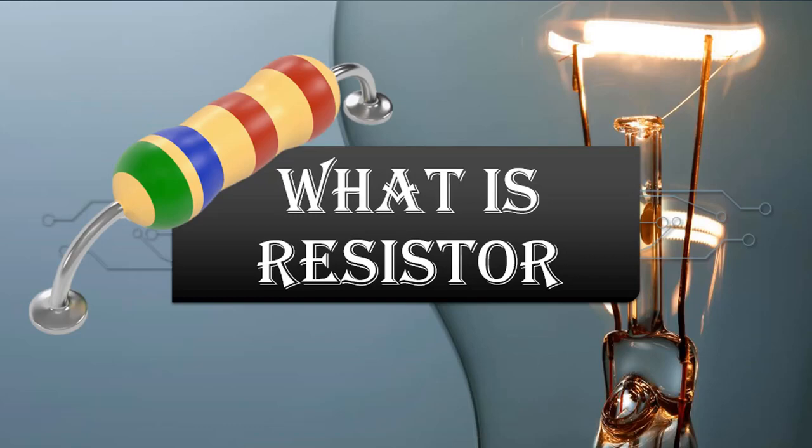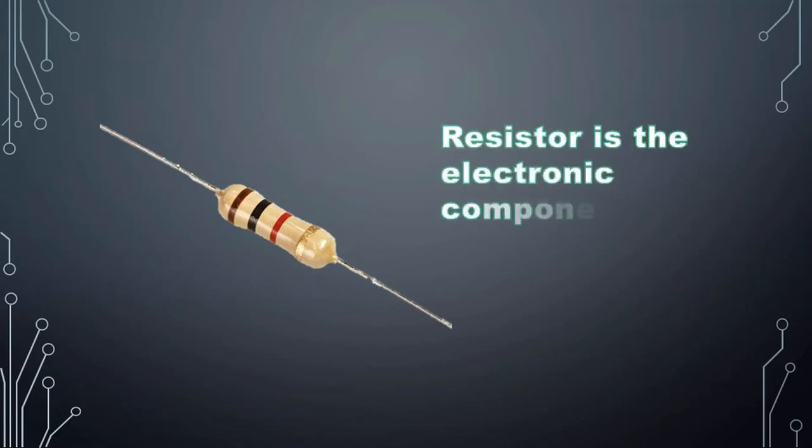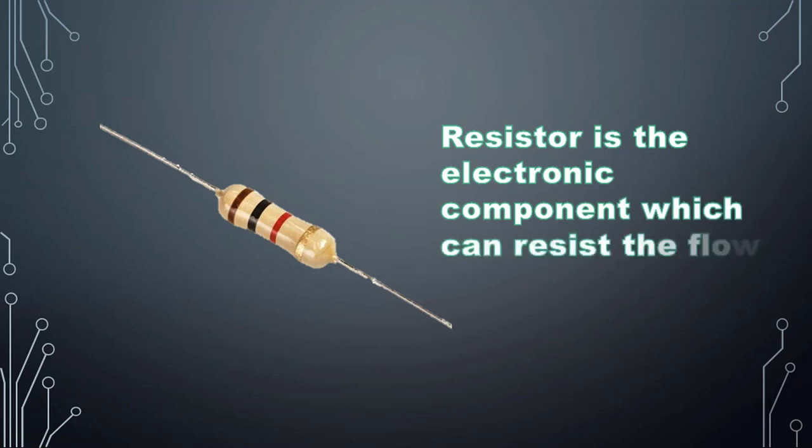What is a resistor? A resistor is a small electronics component. Resistor is the electronic component which can resist the flow of current in a circuit. When you put this resistor in a circuit, it affects the flow of current.